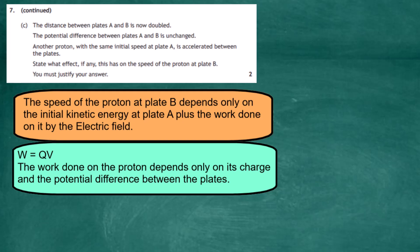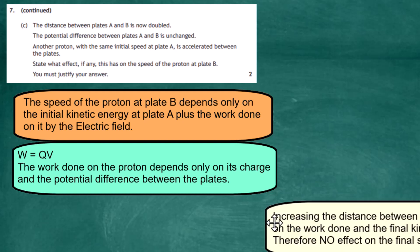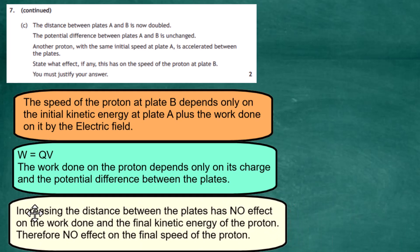From W = qV, the work done on the proton depends only on its charge and the potential difference between the plates. This is another proton with the same charge and the same potential difference, so the work done is the same. With the same initial kinetic energy and the same work done, increasing the distance between the plates has no effect on the final kinetic energy and therefore no effect on the final speed. The final speed remains the same because there is no distance term in the work done equation W = qV.